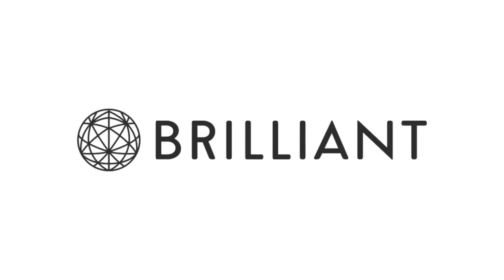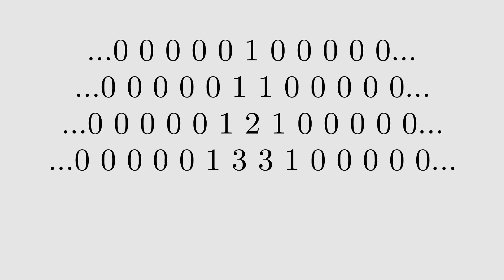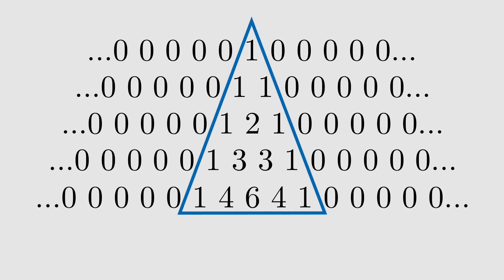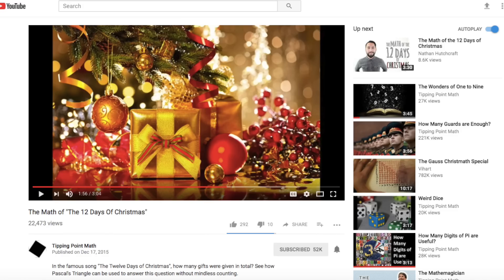This video was sponsored by Brilliant. You might remember Pascal's triangle. Starting with an infinite row of zeros and a single one, new rows of numbers are constructed by adding the two numbers above it. Pascal's triangle is the set of non-zero numbers. We saw Pascal's triangle before in the video about counting how many gifts were given over the 12 days of Christmas.